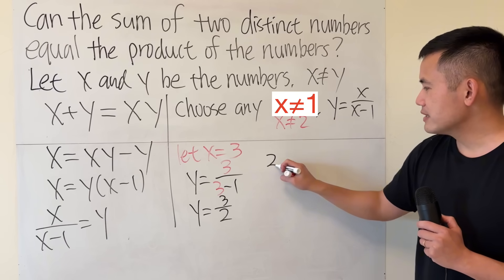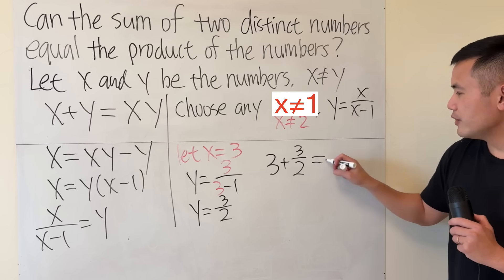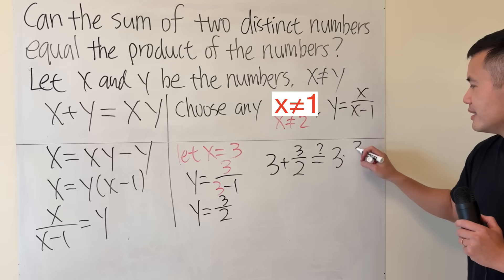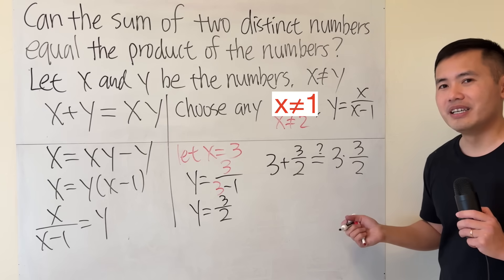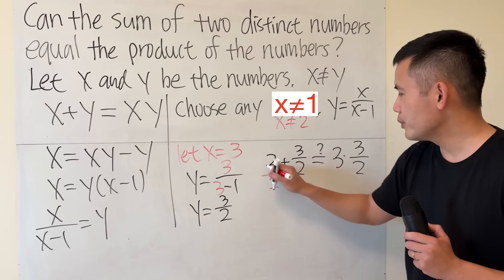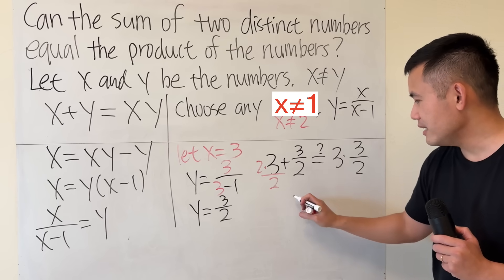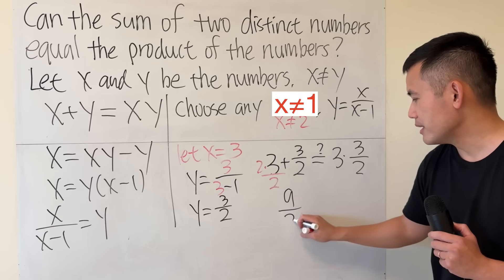Now let's check. 3 is the first number. We are going to add it with the second number, 3 over 2. And if we multiply them instead, do we get the same thing? Yes. If you get a common denominator, which is 2, this is 6 plus 3 is 9, keep the same denominator.